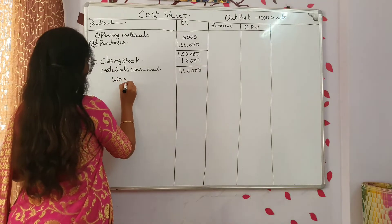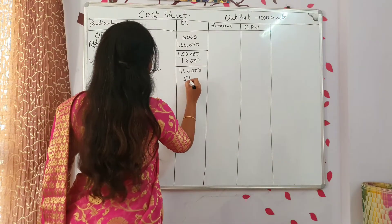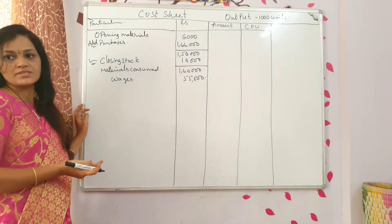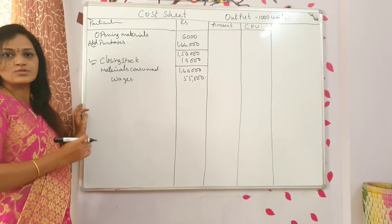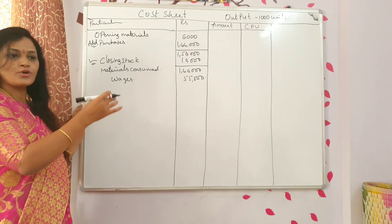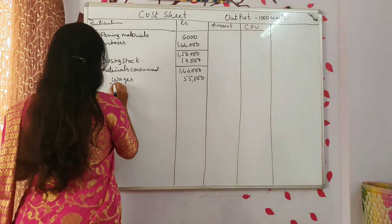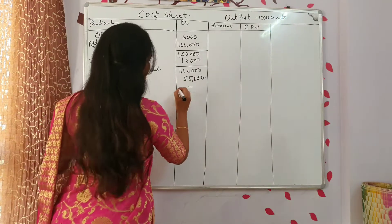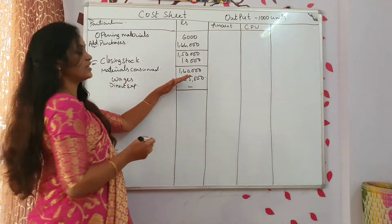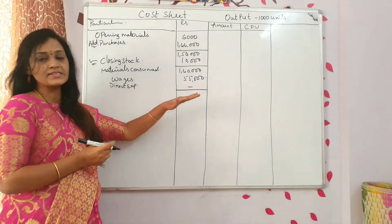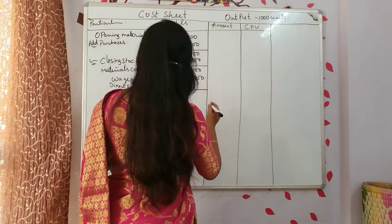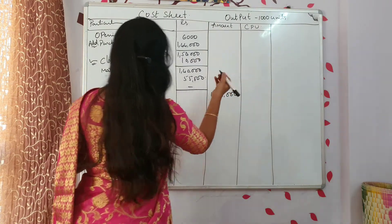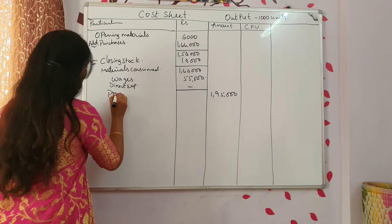Wages: 55,000. Next, any direct expenses or chargeable expenses given in the question? There are none. If it is there, you have to mention that — direct expenses or chargeable expenses. If it is there, take that and do the total. The total is called prime cost. Now do the total — this will be 1,95,000, called prime cost.